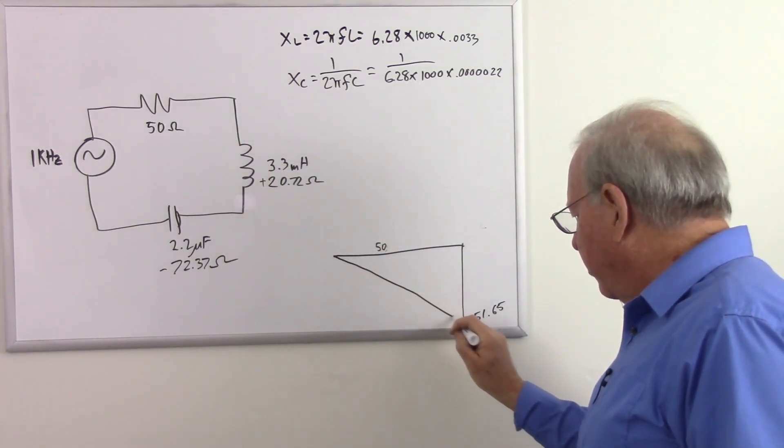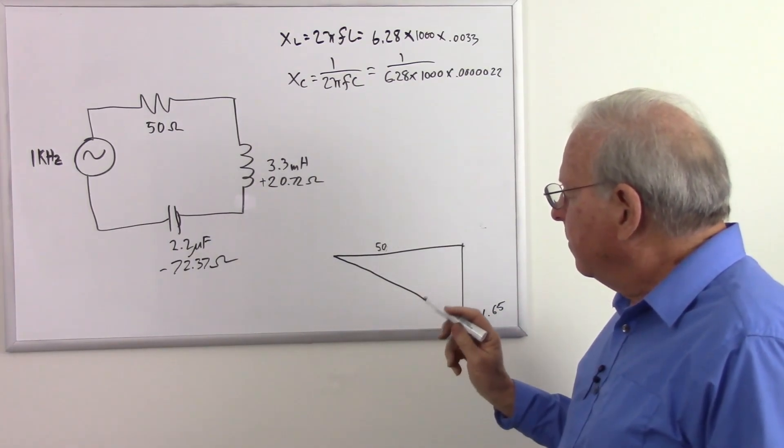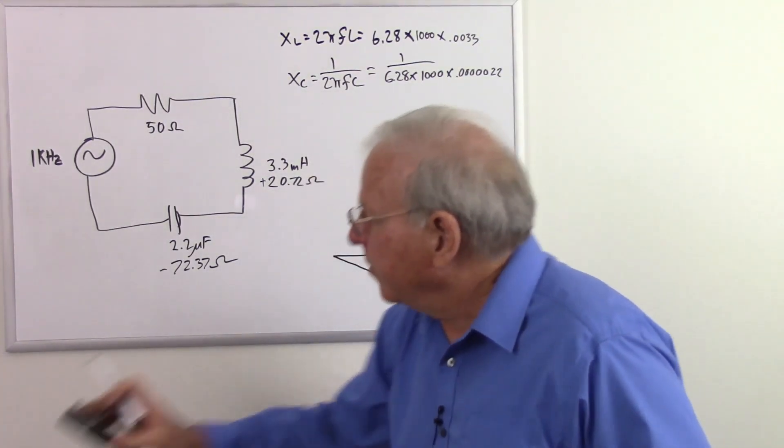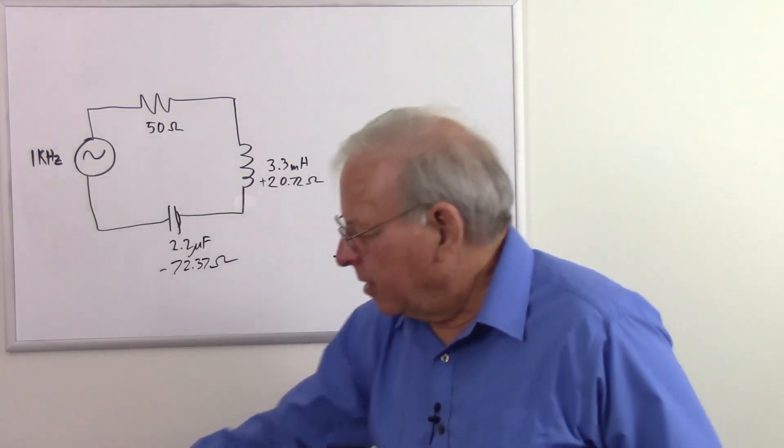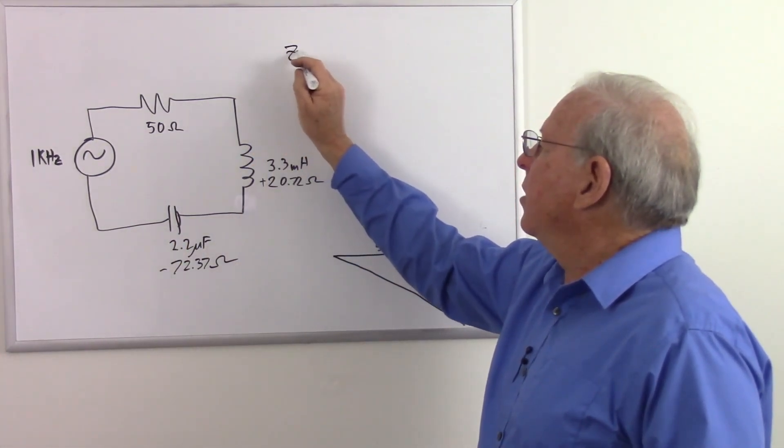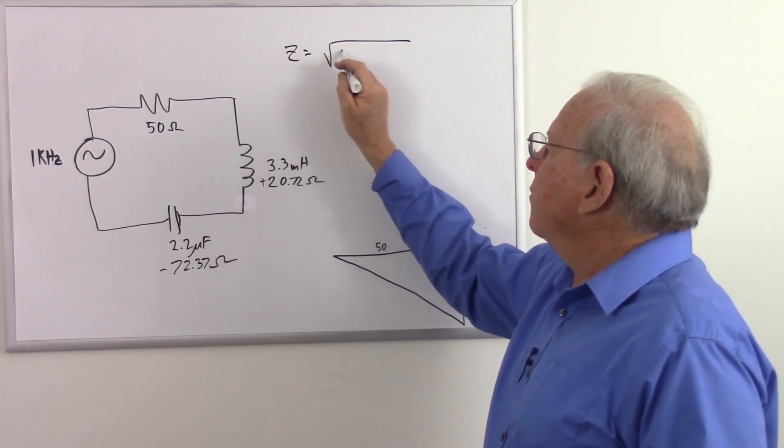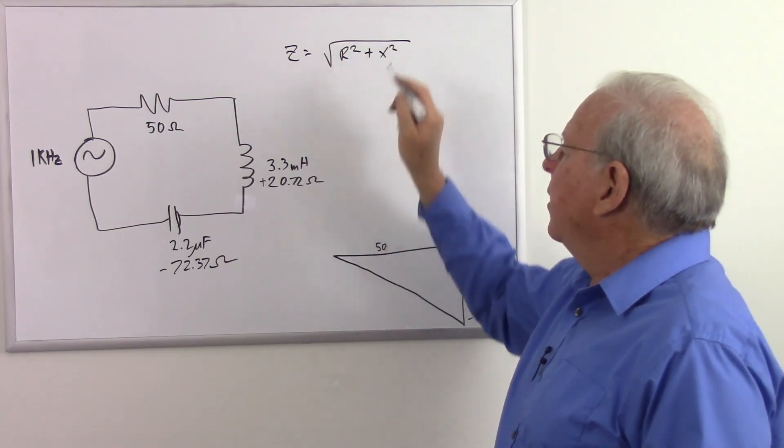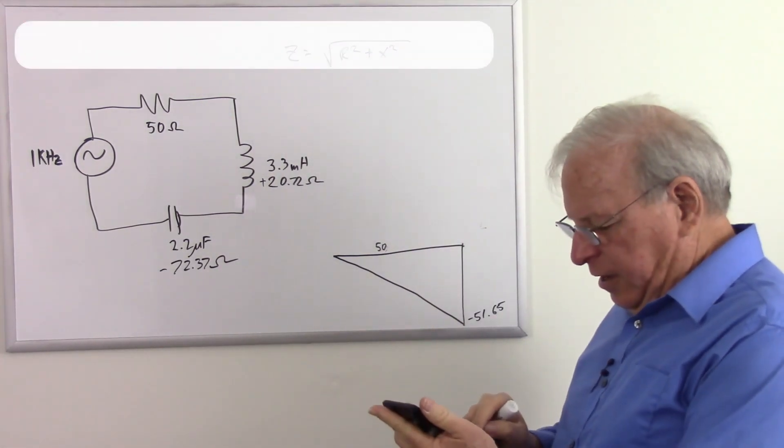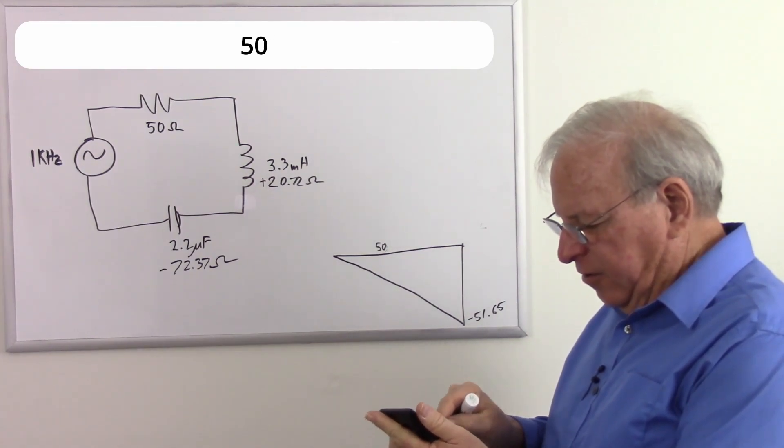So we need to find out the impedance, which is the hypotenuse of that triangle. So as before, the Pythagorean theorem, our total impedance equals the square root of R squared plus X squared.